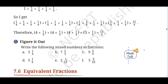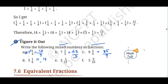Exercise 7.5 part 3 — write the following mixed numbers as fractions: 3 and 1/4: 4×3+1=13, answer 13 upon 4. 7 and 2/3: 3×7+2=23, answer 23 upon 3. 9 and 4/9: 9×9+4=85, answer 85 upon 9. 3 and 1/6: 6×3+1=19, answer 19 upon 6. 2 and 3/11: 11×2+3=25, answer 25 upon 11. 3 and 9/10: 10×3+9=39, answer 39 upon 10.